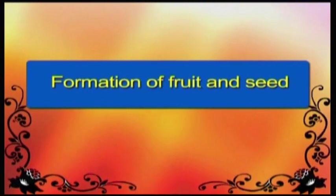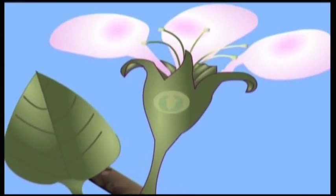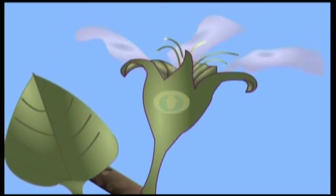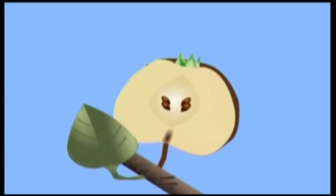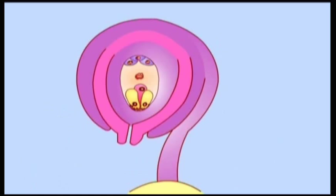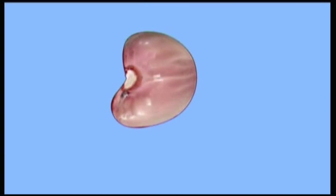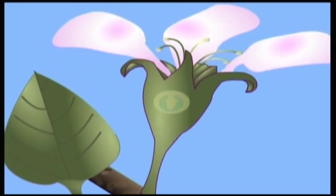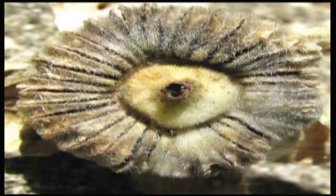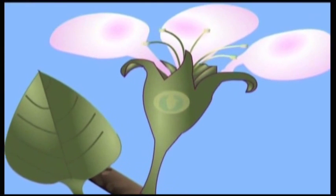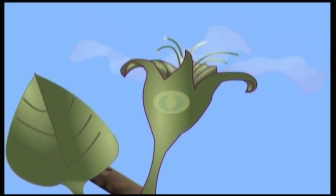Formation of fruit and seed. Fertilization leads to a number of changes in the floral parts. Ovary is converted into a fruit and the ovule into a seed. The two integuments of the ovule change into outer and inner seed coats. The style and the stigma of the pistil fall off. The calyx remains in some cases as a dry structure. The stamens and the corolla of a flower drop off.